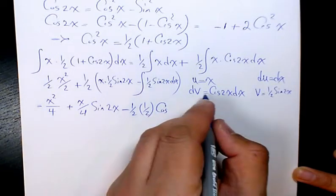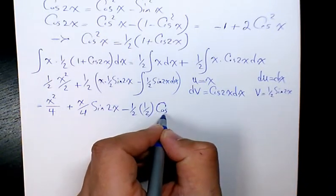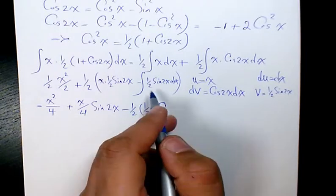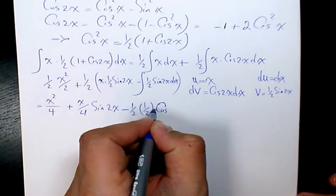Actually, it's going to be negative cosine, because here we have the integration of sine, which is negative cosine 2x.